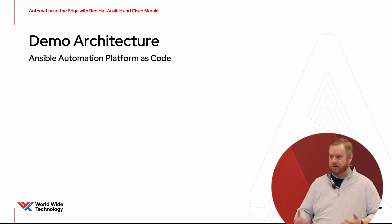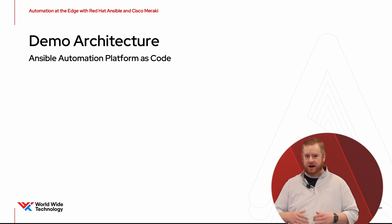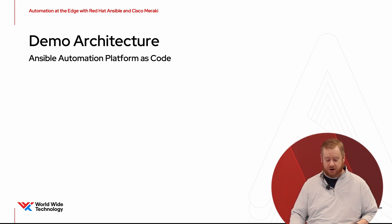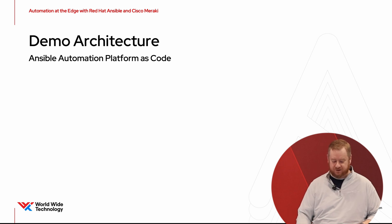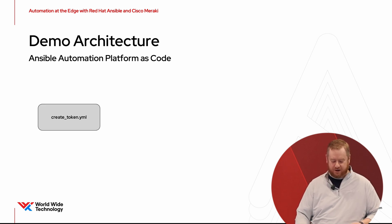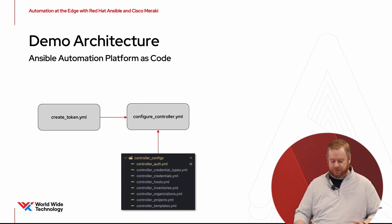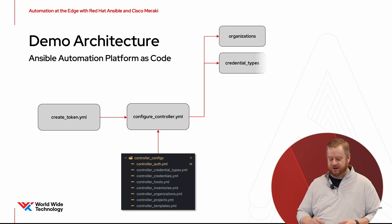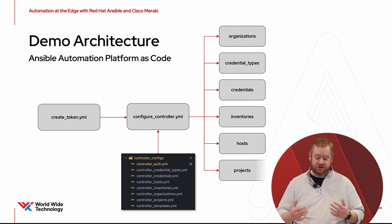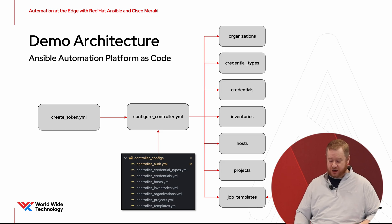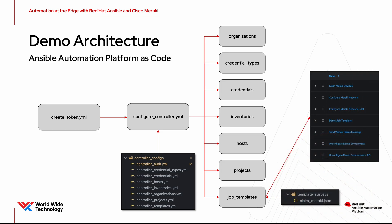Outside of the infrastructure being managed as code, we're also managing Ansible as code. Ansible Automation Platform itself is managed via code — we run some playbooks, pull in the necessary data, which results in organizations, credentials, inventories, job templates, and surveys being provisioned and pushed into the controller. All of the code to do this is available at the end so you can get started and get this demo up and running very quickly.